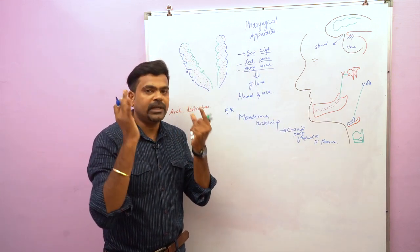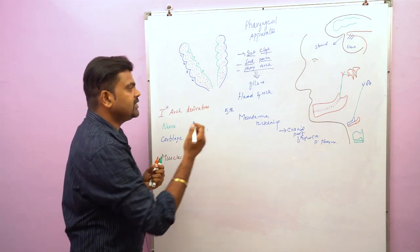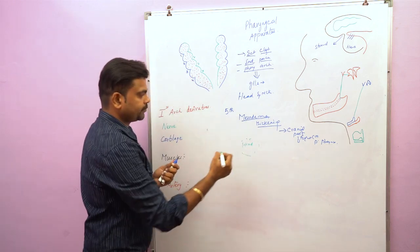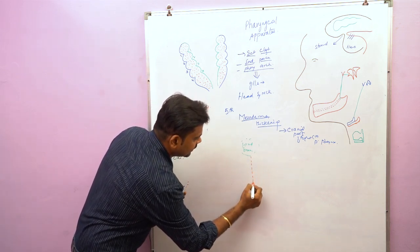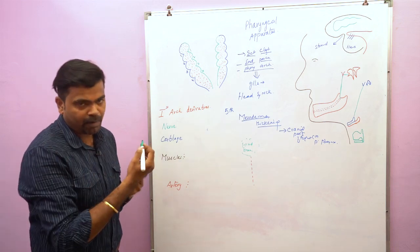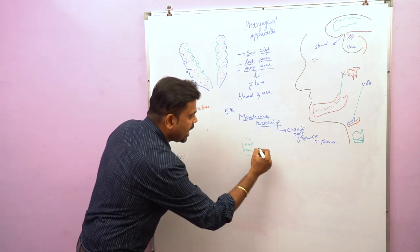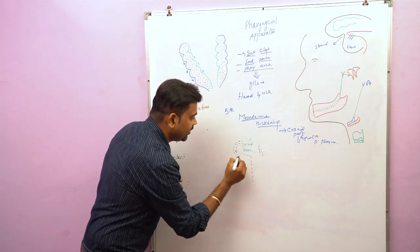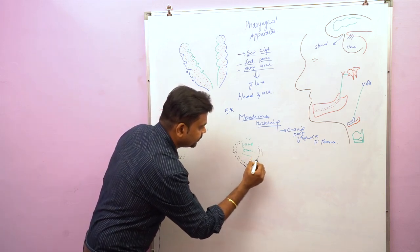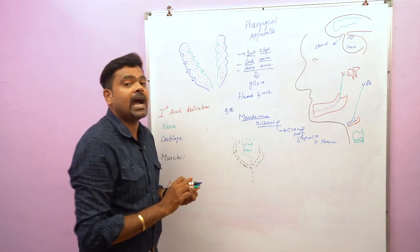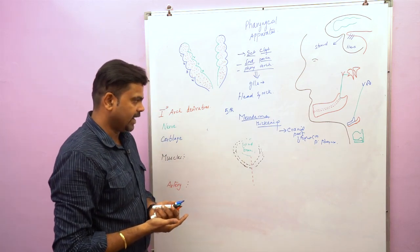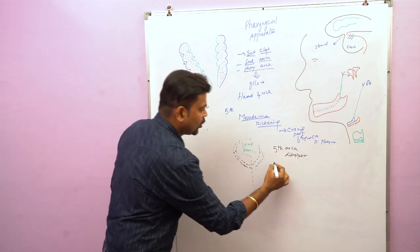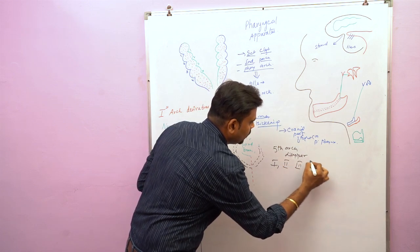This mesodermal thickening is seen around the primitive pharynx, which is why it is called pharyngeal arches. On the dorsal aspect there is the presence of the hindbrain vesicle. The mesodermal thickening is present in the form of arches; it extends dorsally from the hindbrain vesicle, passes forward along the side of the pharynx, then ventrally and medially to reach the midline, and fuses with the corresponding arch. Totally six pharyngeal arches are present, but the fifth arch disappears, leaving the first, second, third, fourth, and sixth arches.